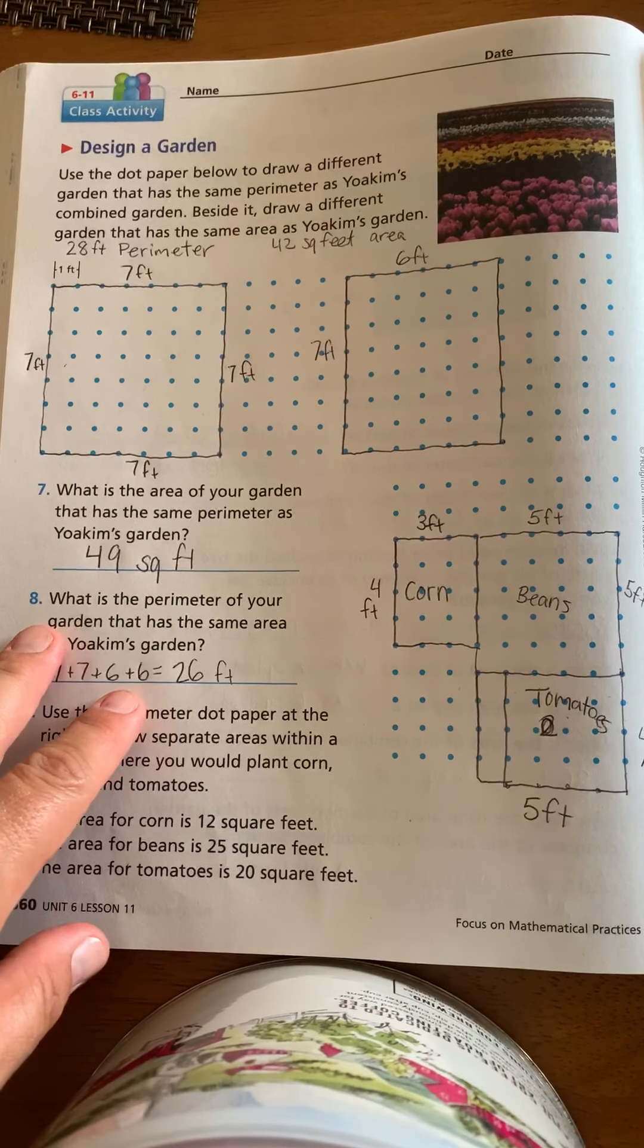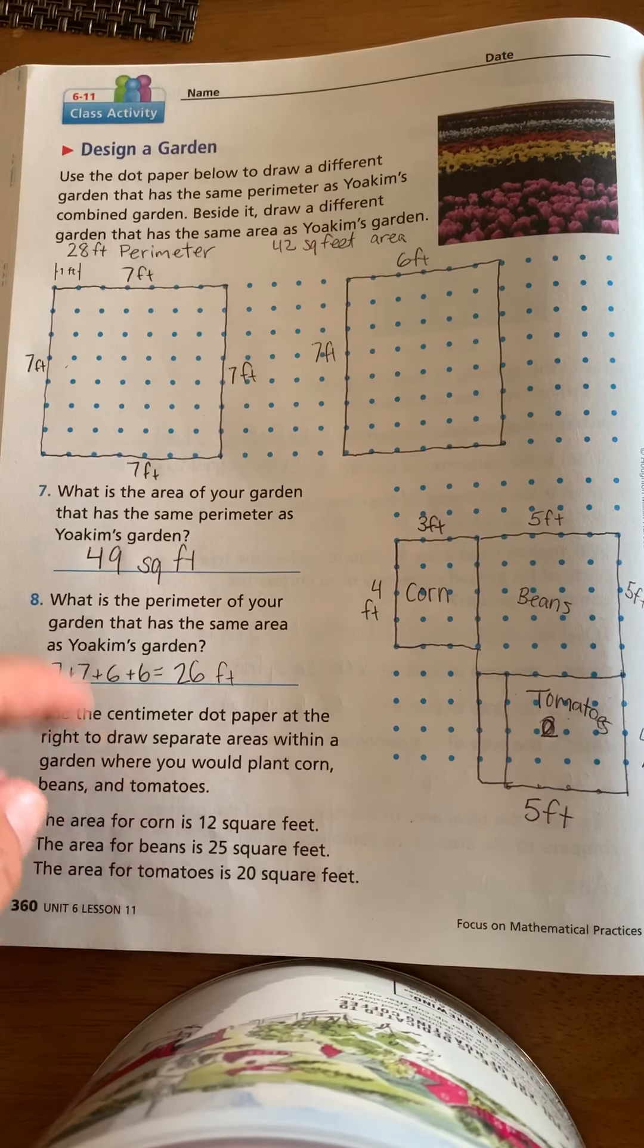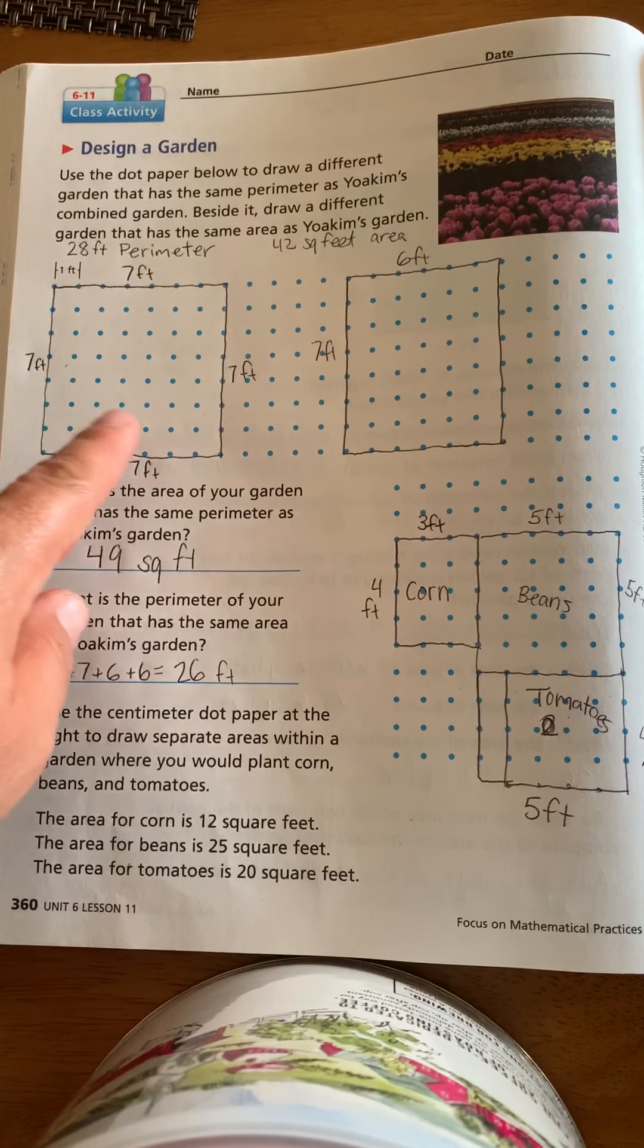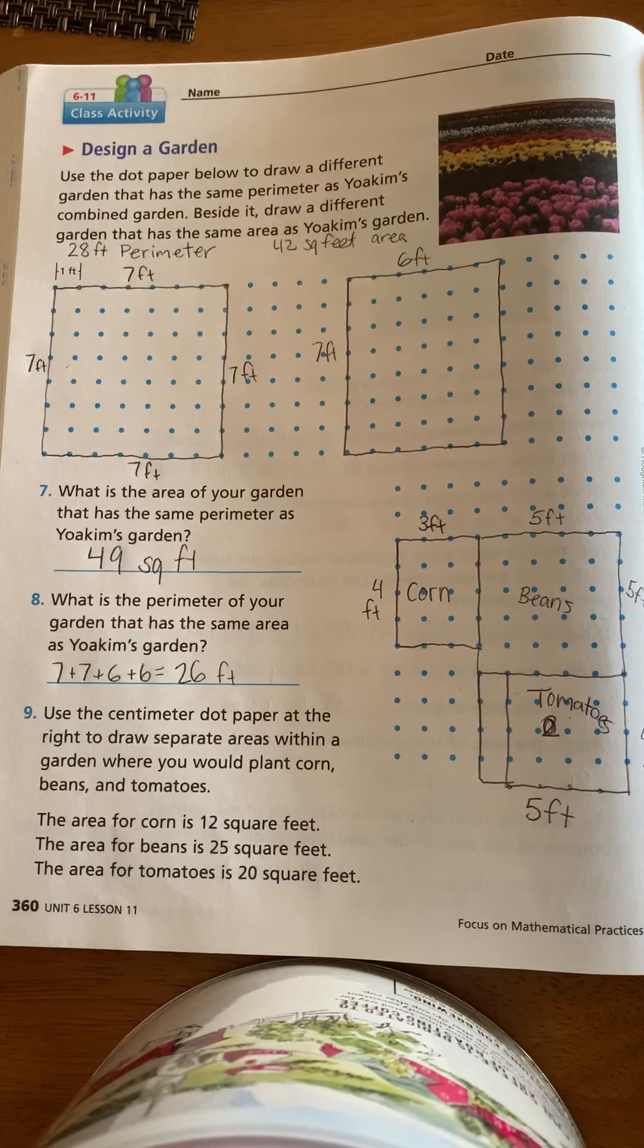Number seven, what is the area of your garden that has the same perimeter as Joaquin's garden? Well, my garden, since it's 7, four 7s, it's 7 times 7. So it's 49 square feet.